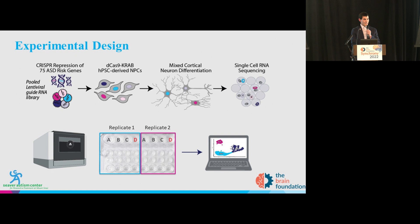CRISPR-Cas9 technology uses a protein called Cas9 that we can direct anywhere in the genome using a short piece of RNA called a guide RNA. We direct the Cas9 to block the transcription of an autism risk gene and thereby mimic this loss-of-function mutation — we call this CRISPR interference, or CRISPR-I. These guide RNAs are easily cloned into a guide RNA library, where each color represents guiding the Cas9 to a different autism risk gene, allowing us to knock down RNA and protein levels and study the downstream consequences.